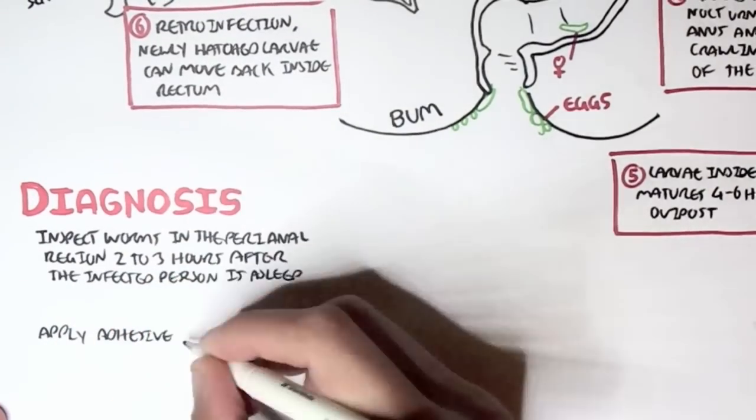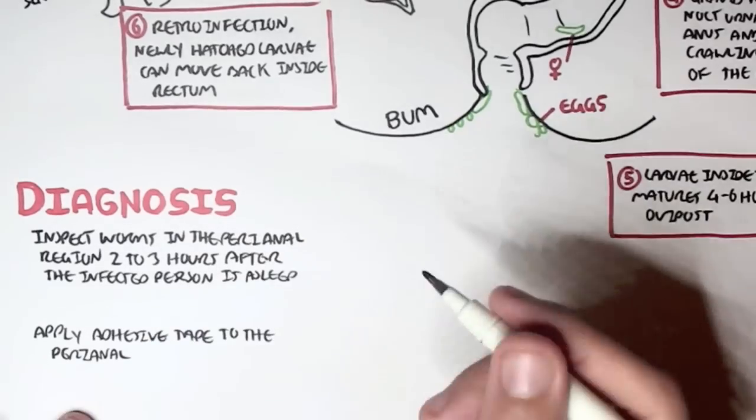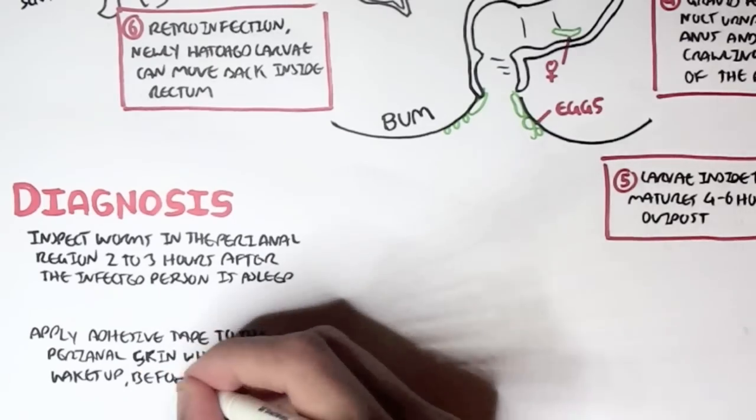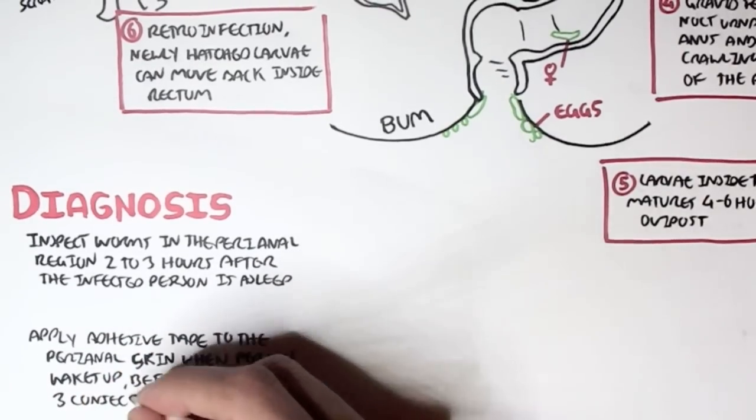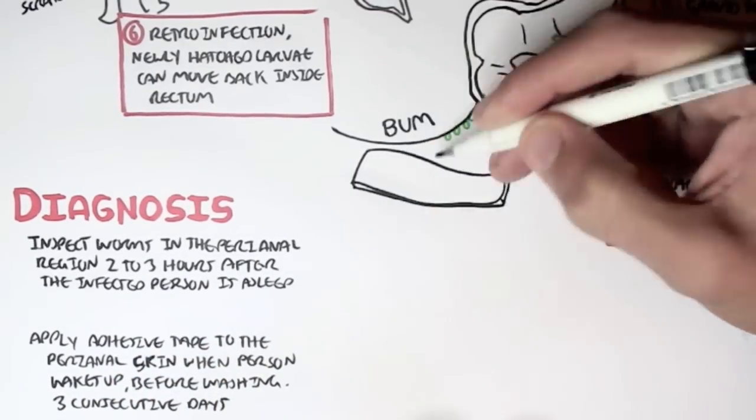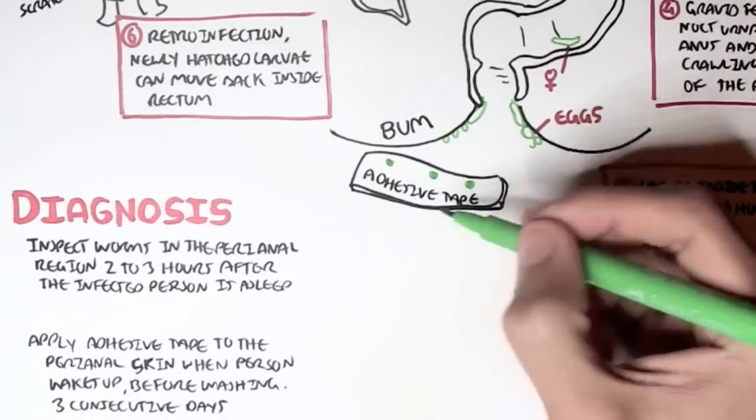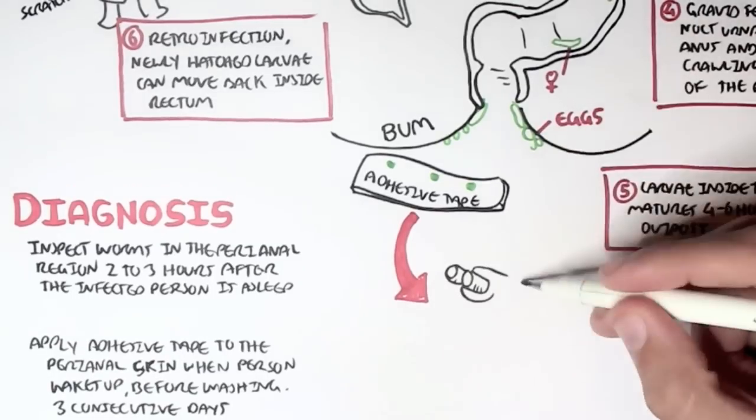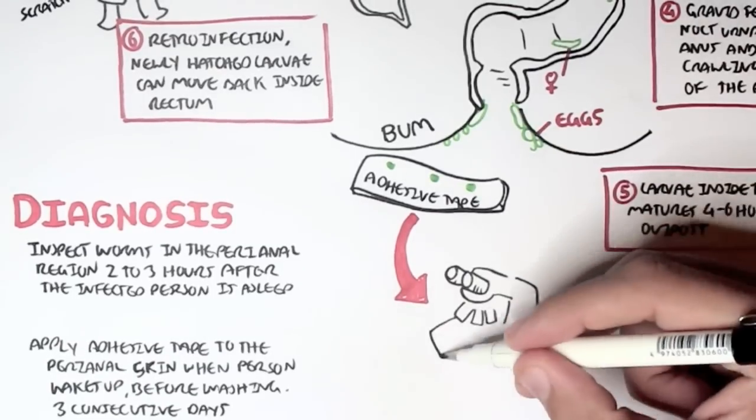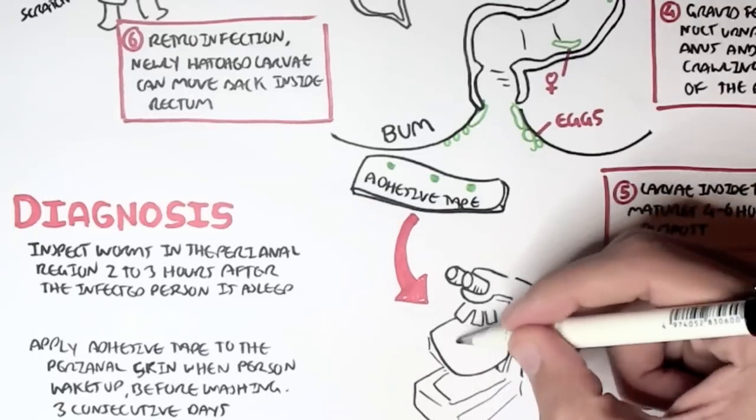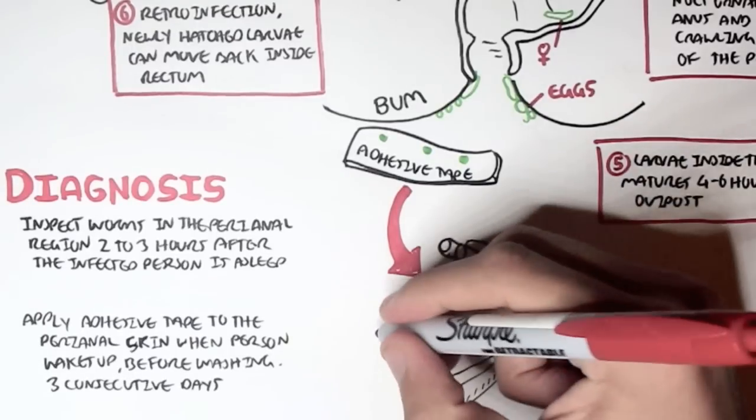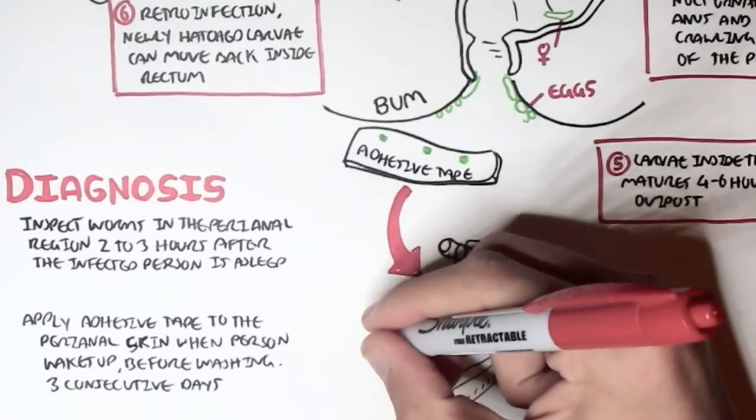Or you can apply adhesive tape, which is normally done by doctors, apply adhesive tape to the perianal skin when the person wakes up and before they have a shower. And we have to do this in 3 consecutive days. So we get the tape early in the morning, and it should have on it eggs and stuff. And then with this, we can visualize these eggs with an anal smear using a microscope. And if we can obviously see eggs, this person would be suffering from pinworms.